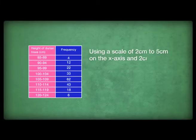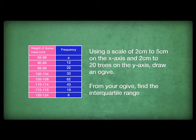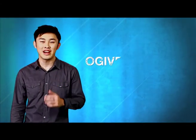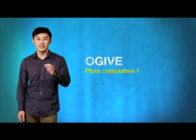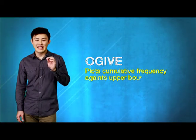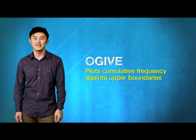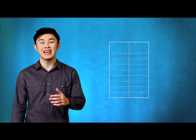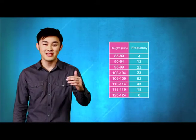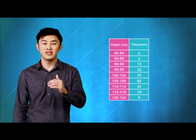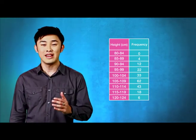So let's take a look at this question. The table shows the height frequency distribution of 200 durian trees. The question requires us to draw an ogive. An ogive plots the cumulative frequency against the upper boundaries. Note that we need another class above the first to mark the cumulative frequency of zero.